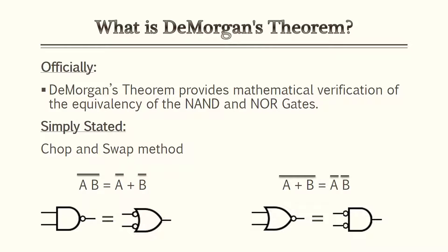This lesson we're going to go over DeMorgan's Theorem. DeMorgan's Theorem provides a mathematical verification of the equivalency of NAND gates and NOR gates. In short, we're actually doing Boolean algebra equations that have NAND gates and NOR gates, and we're going to figure out how to simplify those down using DeMorgan's Theorem. There's going to be a method called the chop and swap method, and we'll go into more detail later on.